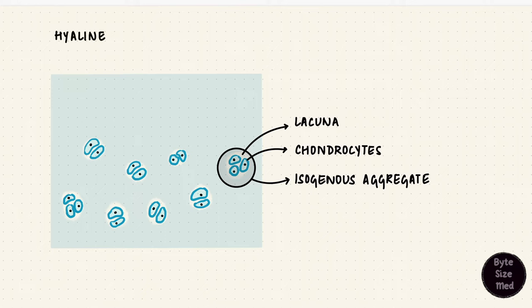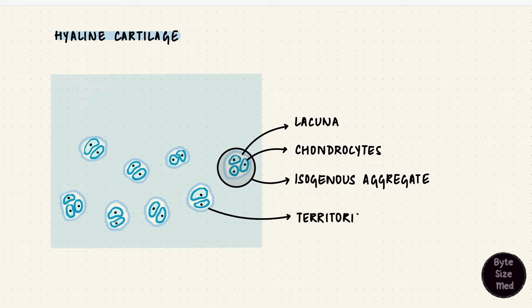Now remember we're talking about the first type of cartilage, and that is hyaline cartilage. The matrix immediately around the lacunae stains darker, and that's called the territorial matrix, while the distant, paler matrix is called the interterritorial matrix.